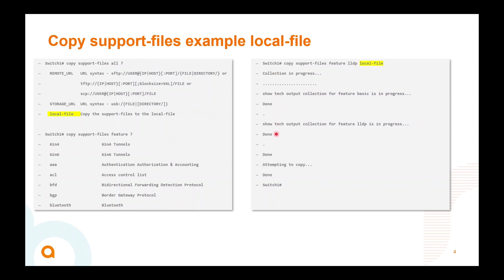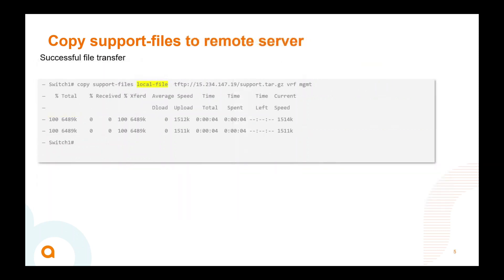You can see the output at each point: it shows where it is, what it is attempting to copy, and then gives you confirmation when it is done. If you then want to transfer the locally saved file to a TFTP or SFTP server, the syntax is straightforward: 'copy support files.'